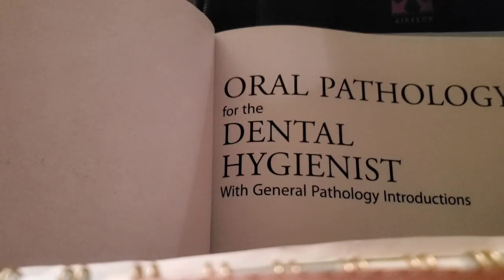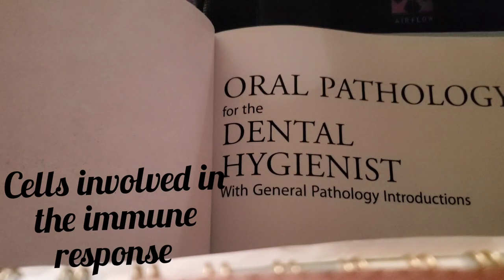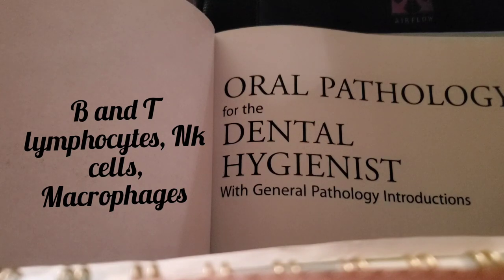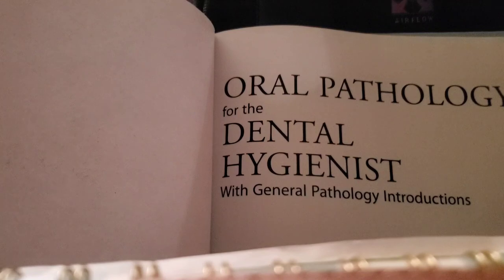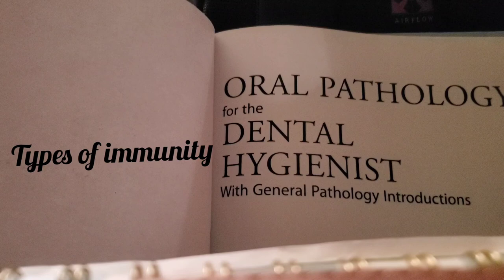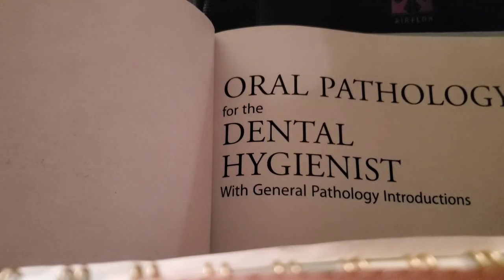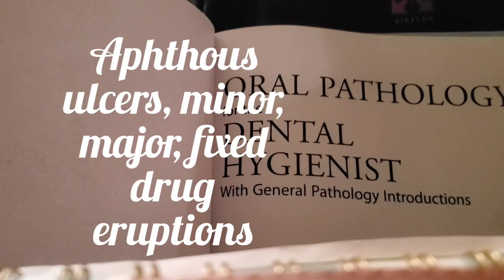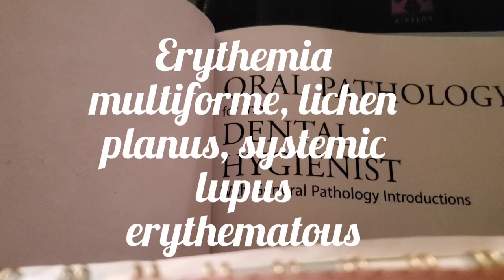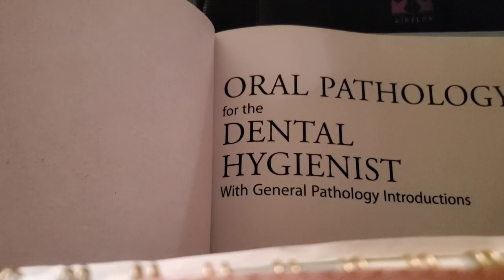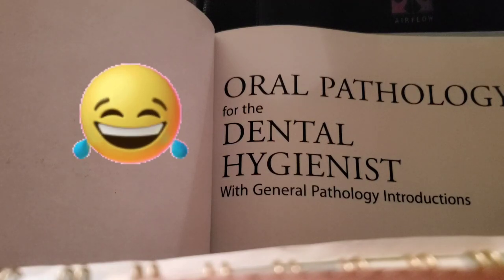Chapter Three: know the cells involved in the immune response — for example, B lymphocytes, T lymphocytes, NK cells, and macrophages. Also know the types of immunity: passive immunity, active immunity, and hypersensitivity types one, two, three, and four. Also know your oral diseases with immunologic pathogenesis — for example, aphthous ulcers (minor and major), fixed drug eruptions, erythema multiforme, lichen planus, systemic lupus erythematosus (SLE), and pemphigus vulgaris. That's Chapter Three.